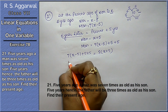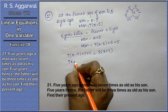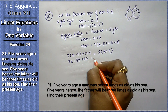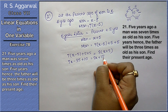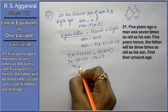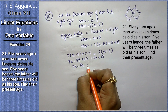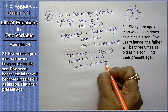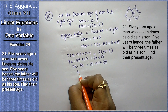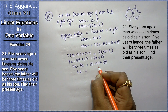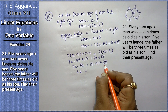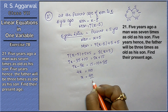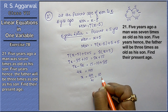Now we will solve this equation. 7x minus 35 plus 10 equals to 3x plus 15. Collecting x terms: 7x minus 3x. Collecting non-x terms: 15 minus 10 plus 35. So 4x equals 40.